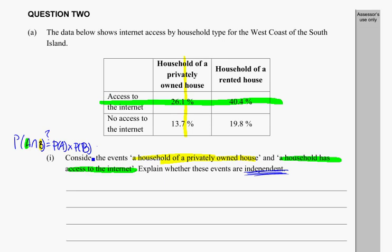This table has a little trick for us. The first thing to notice is that all the values are in percentages. Never do any calculations with a percentage — you always have to convert them to a decimal first. So make sure you rewrite all these values as decimals before going any further, to avoid mistakes.